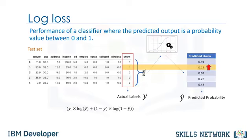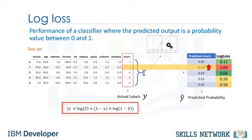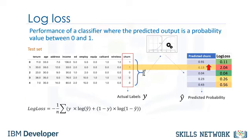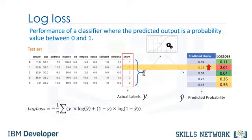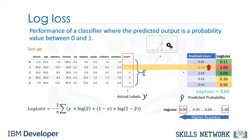We can calculate the log loss for each row using the log loss equation, which measures how far each prediction is from the actual label. Then we calculate the average log loss across all rows of the test set. It is obvious that ideal classifiers have progressively smaller values of log loss. So, the classifier with the lower log loss has better accuracy.